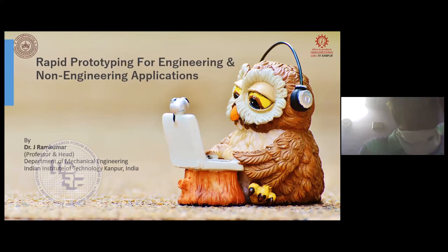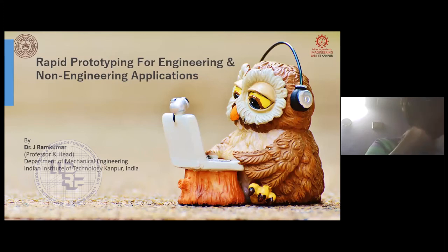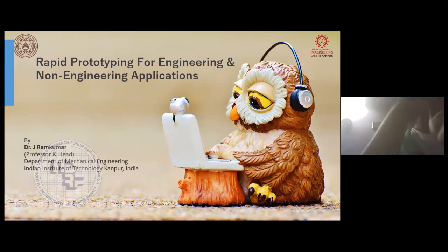The second interesting example is using 3D printing to print houses. Like the FDM process, you mix all cement ratios — quick cement and everything — put it on a cantilever arm similar to a crane, and start printing. Interestingly, they can print small stopgap houses of two or three rooms within 24 hours. This is the second application in the non-engineering area that impressed me. The third one is the food industry.